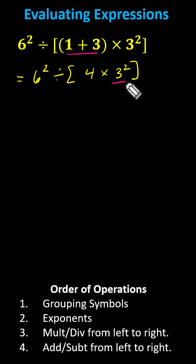3 squared equals 3 times 3, or 9, giving us 6 squared divided by the quantity 4 times 9.